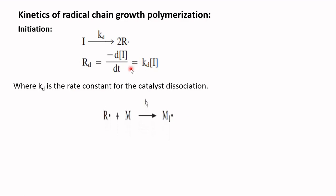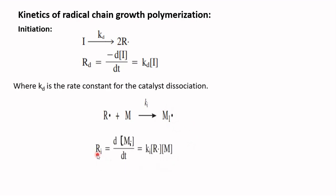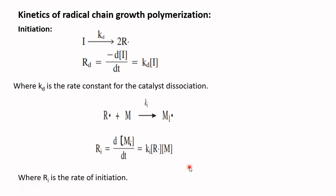In the next step, the free radical formed by decomposition of the initiator attacks the monomer and initiates the reaction, producing a chain radical. The rate of initiation equals d[M•]/dt, which equals k_i times the concentration of radical times the concentration of monomer, where r_i is the rate of initiation.